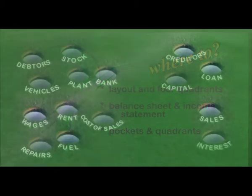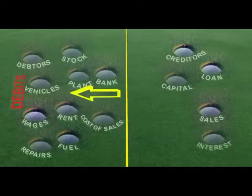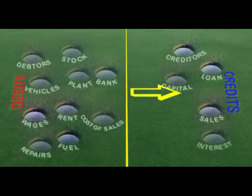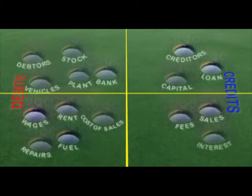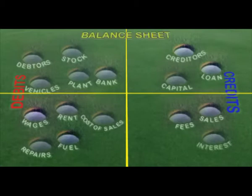As with any playing field, there is a center line. To the left we have the debit players and to the right the credits. There is one more interesting characteristic about our field: it has a second dividing line, one that runs lengthways down the field. This produces a top part and a bottom half of the field. The top half we refer to as the balance sheet area and the bottom part as the income statement area.